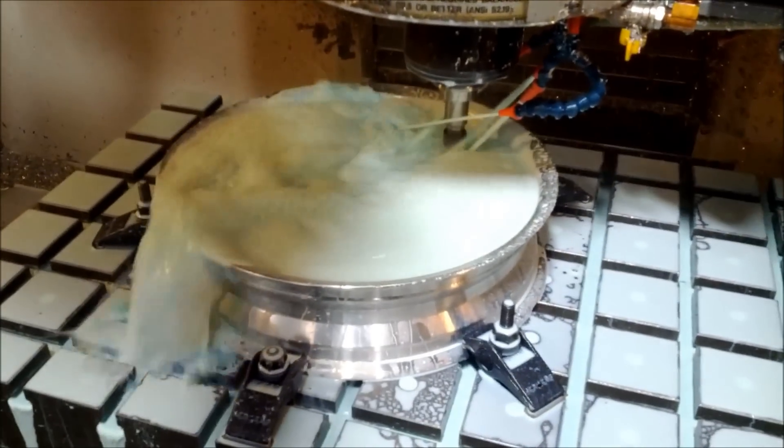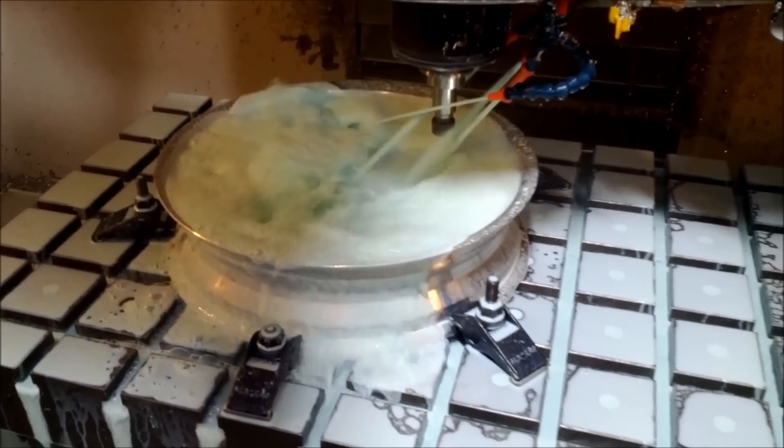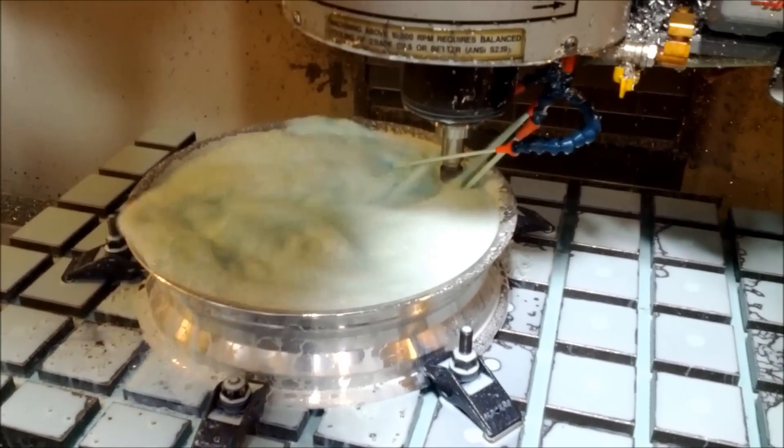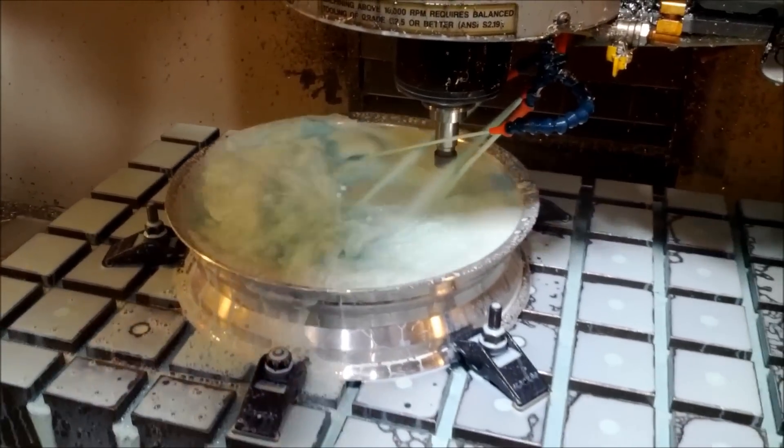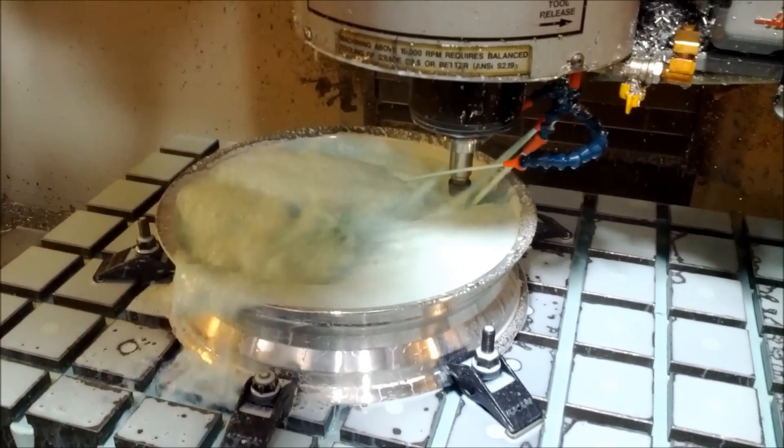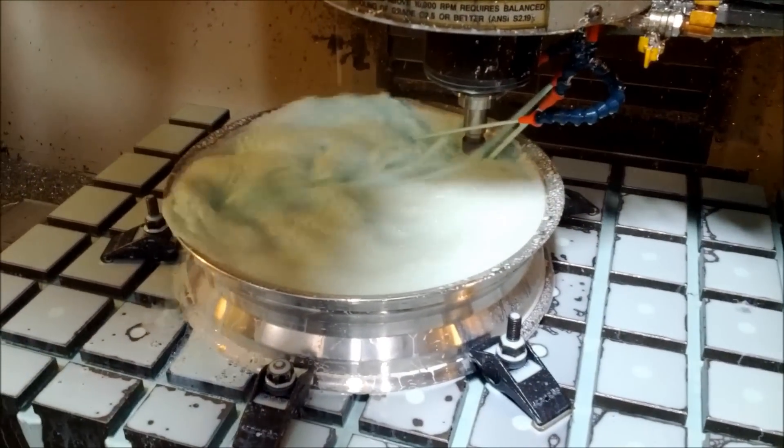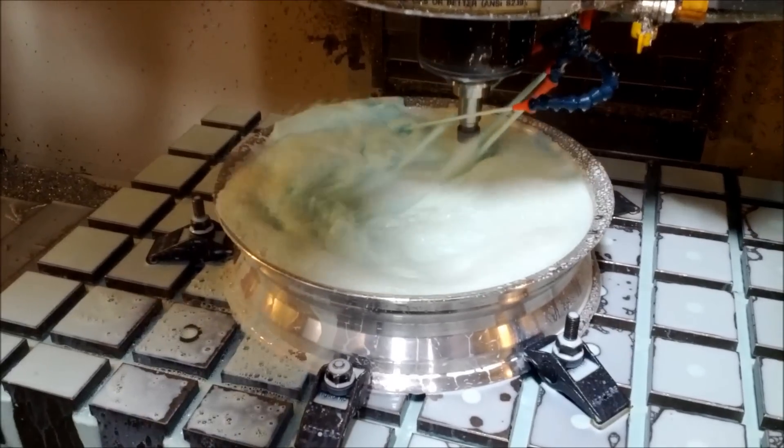And we're finishing up engraving on the second side here. A few more little passes to make. And we've got to mill out the center piece and open it up for my hub.